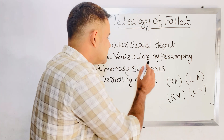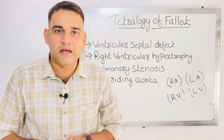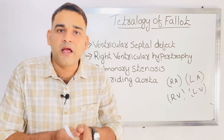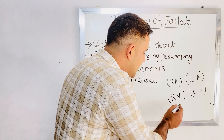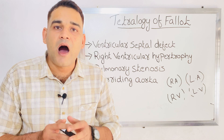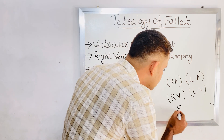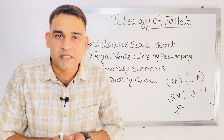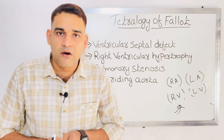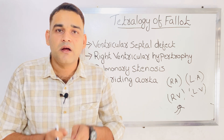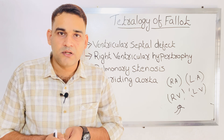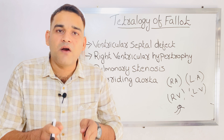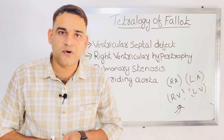The next one is pulmonary stenosis. Stenosis means narrowing — narrow or small. After the right ventricle, there is a connection to the pulmonary artery with a valve — the pulmonary valve — between the right ventricle and the pulmonary artery. In pulmonary stenosis, the pulmonary valve area will be narrowed. That is pulmonary stenosis — narrowing of the pulmonary valve area.